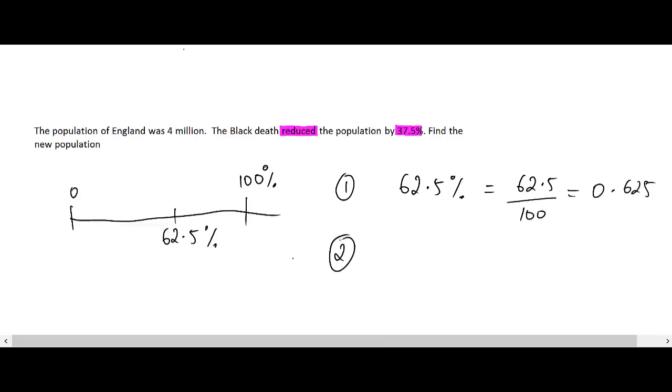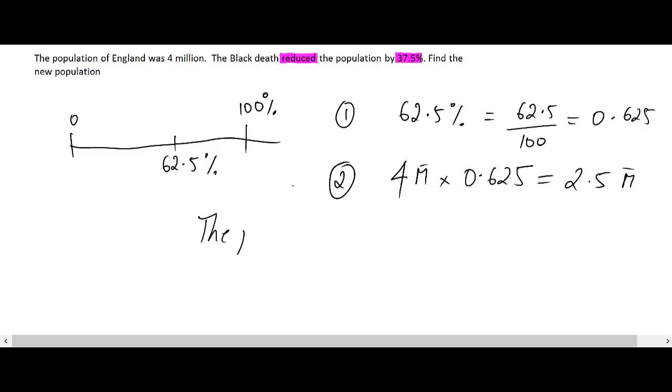And step number 2, I'm going to use my original number, which was 4 million. So, I'm going to do 4 million and I'm going to multiply this by 0.625. And again, if I take a calculator, 4 times 0.625 gives me 2.5 million. So, the population of England was 2.5 million after the Black Death.